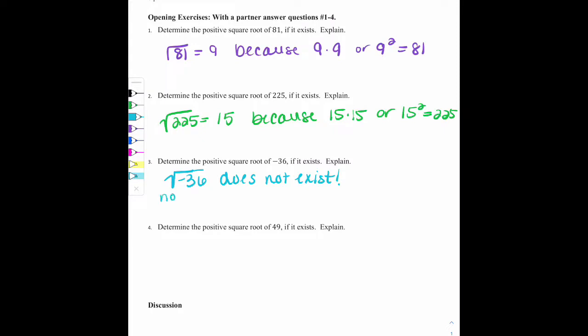You can say, no value times itself equals negative 36. So that's one option. Another option would be to say that there is no value of x that satisfies the equation x squared equals negative 36. That's not going to happen.